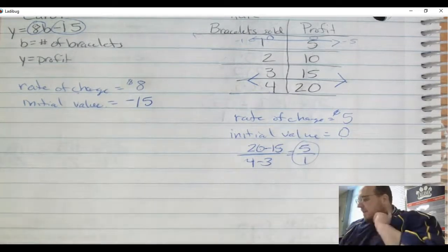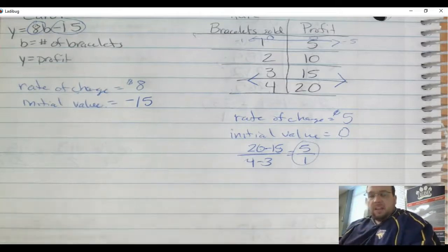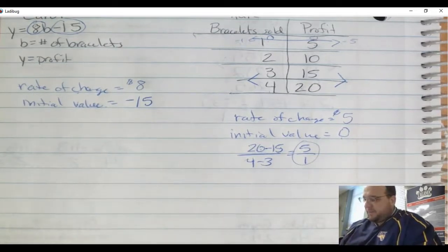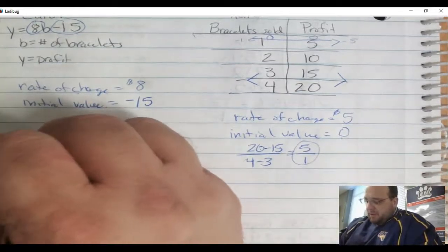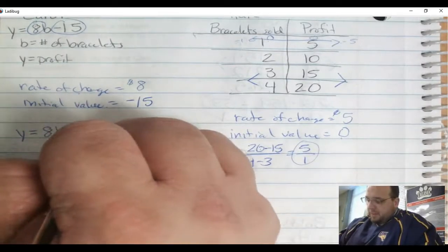So a question I might ask - who's going to make more of a profit for 5 bracelets? We'll start with Carol first. So we're going to use her equation. And I want to know who has the larger profit for 5 bracelets.